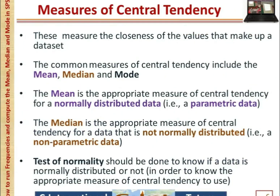Let us examine the measures of central tendency. This measures the closeness of the values that make up a data set. The common measures include the mean, median, and mode. The mean is appropriate for normally distributed (parametric) data, while the median is appropriate for data that is not normally distributed (non-parametric data). A test of normality should be done to determine which measure of central tendency to use.